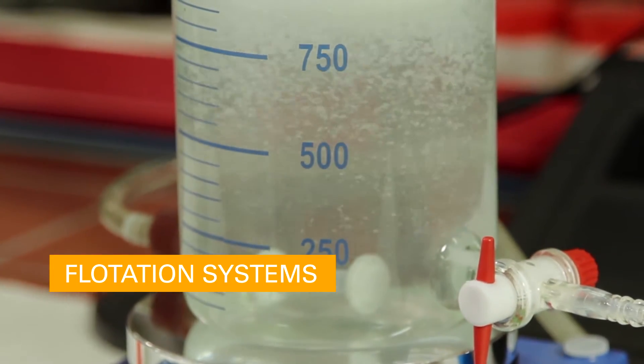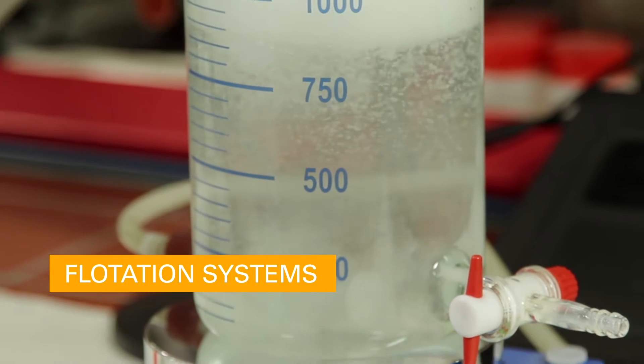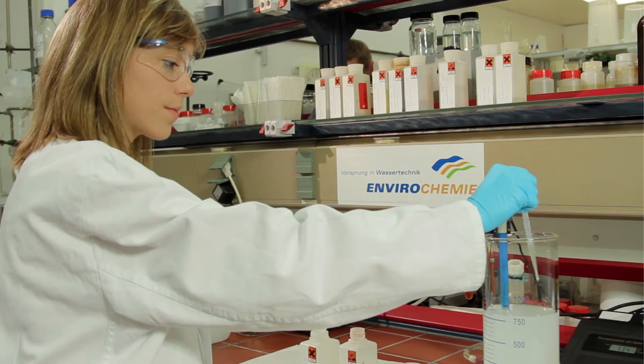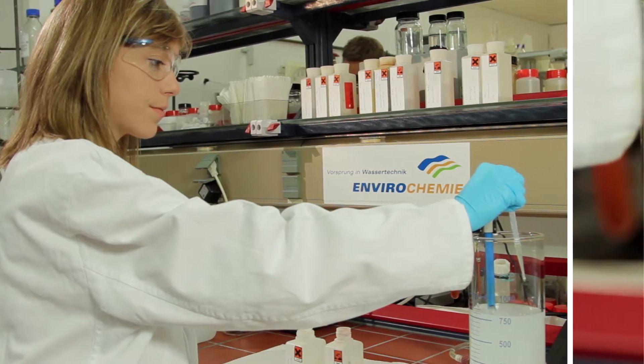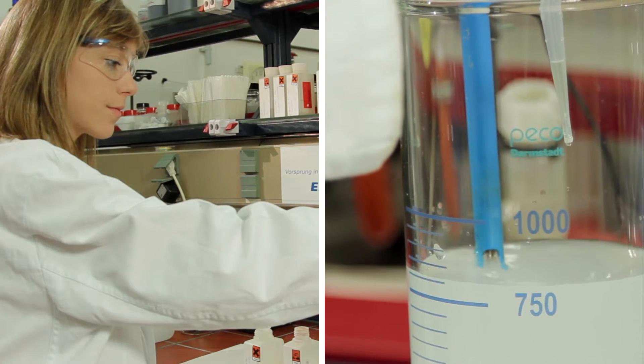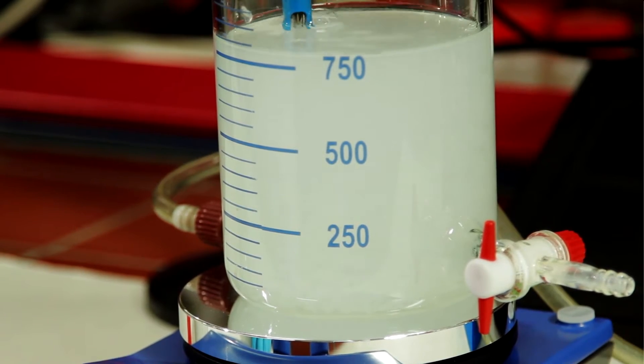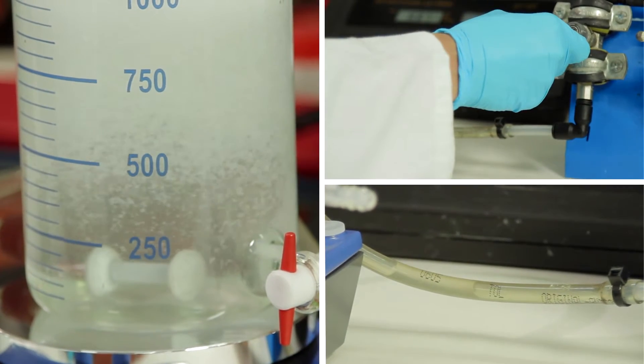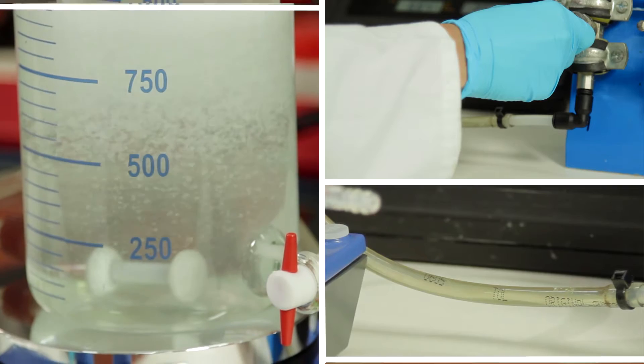Flotation systems: Dissolved air flotation. In the flotation process, water chemicals are added to the wastewater. These form flocks together with the dirt particles. The air introduced by the Flomar air power system forces the flocks to the surface, where they are skimmed off.